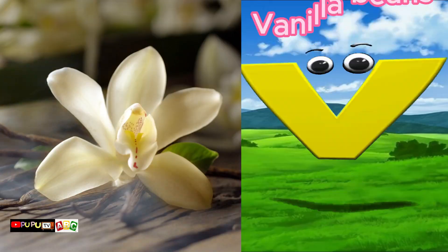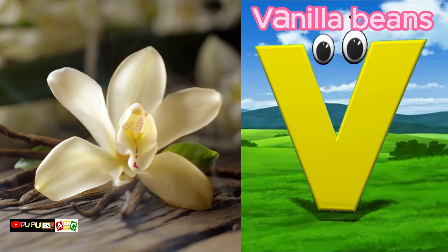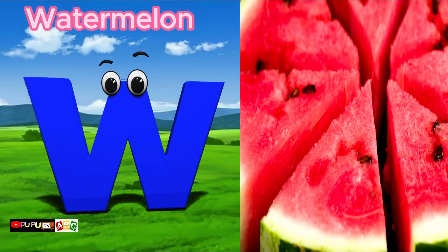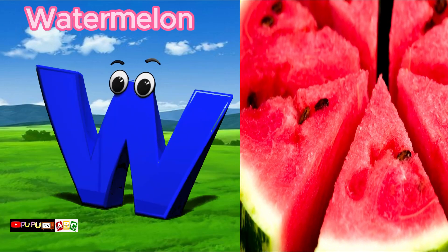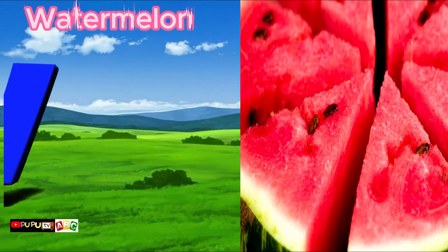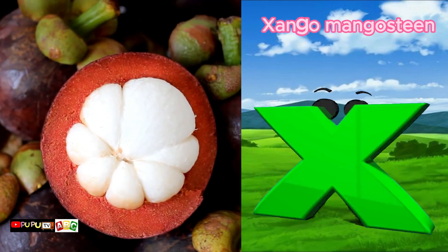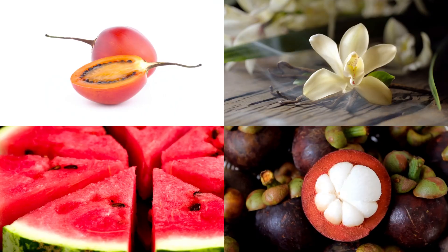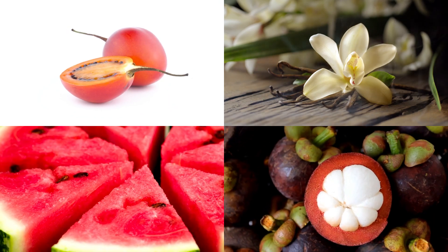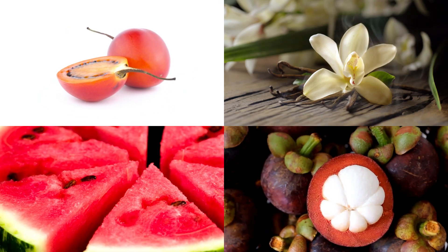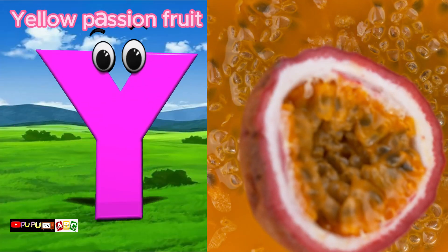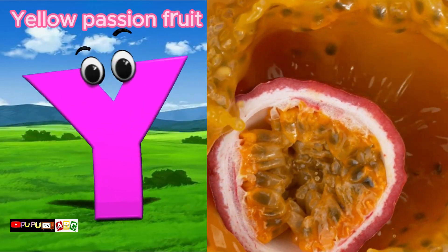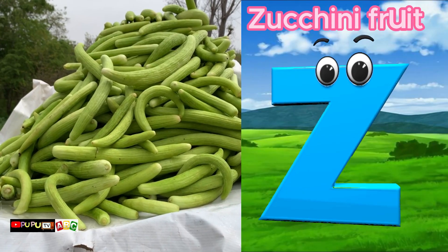V is for Vanilla Beans. W is for Watermelon. Watermelon. X is for Xango Mangosteen. Y is for Yellow Passion Fruit. Yellow Passion Fruit. Z is for Zucchini Fruit.